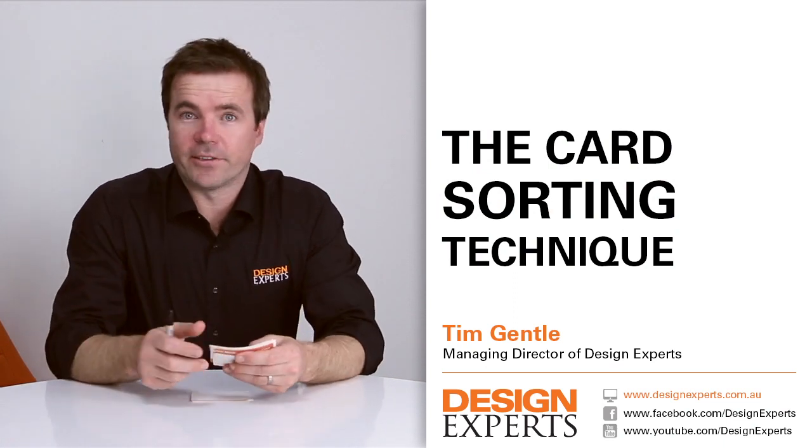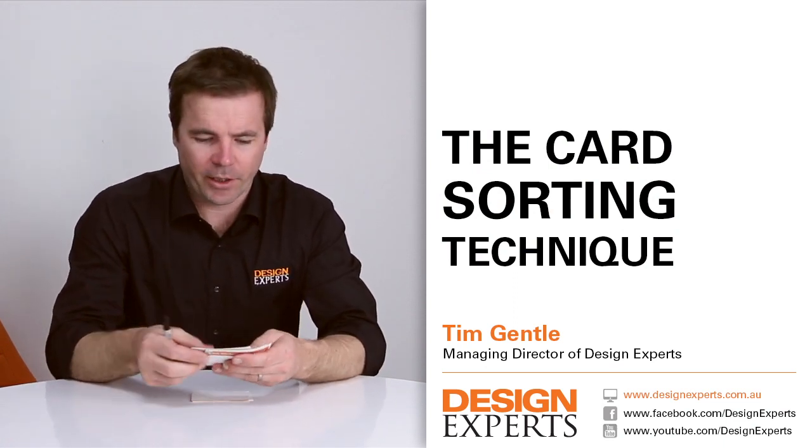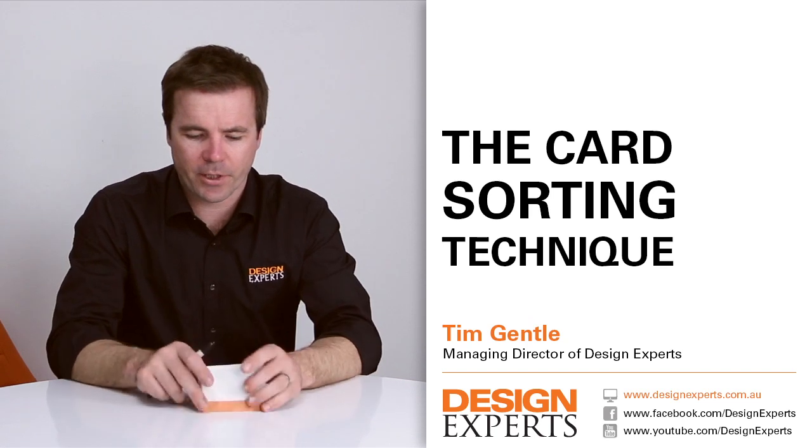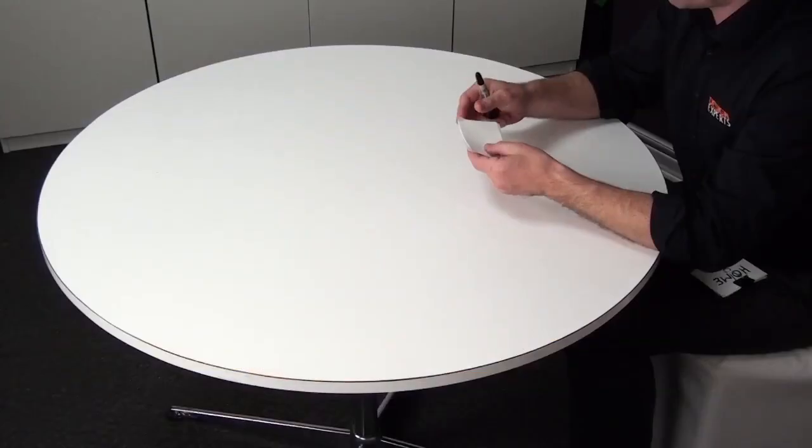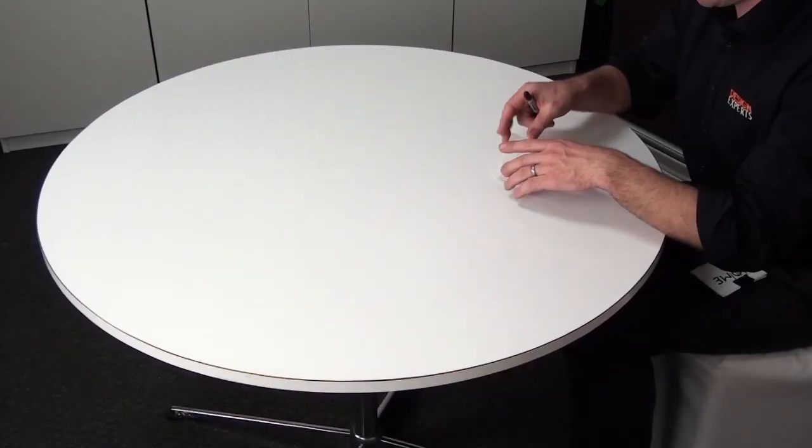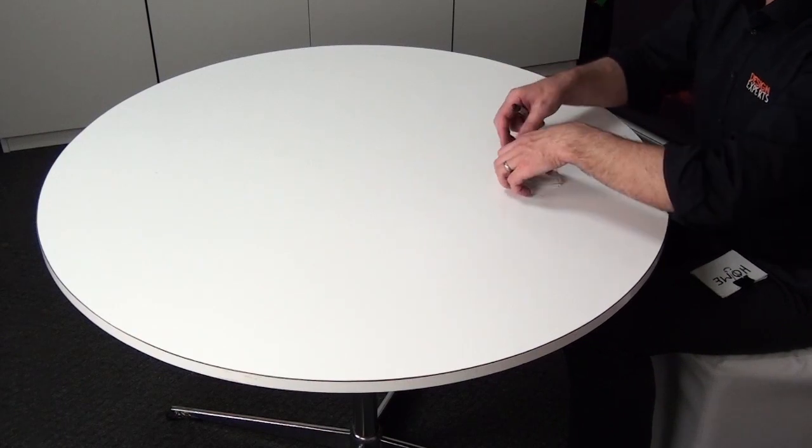This is called the card sorting technique. You need some pieces of paper - take an A4, cut it up into about eight parts, and these become cards. After you've done that initial question and answer strategy session at the start - who are your customers, what's your product, what's your image - those questions, then we sit down.